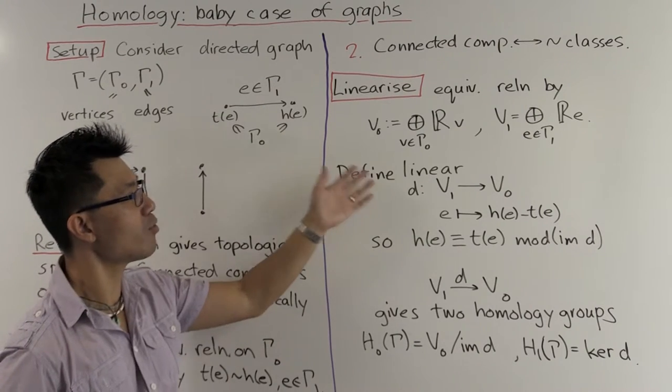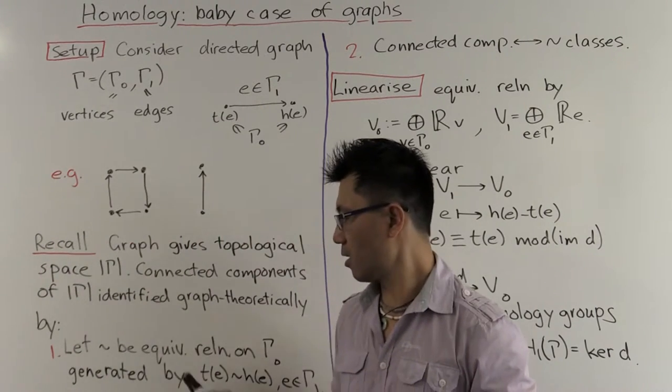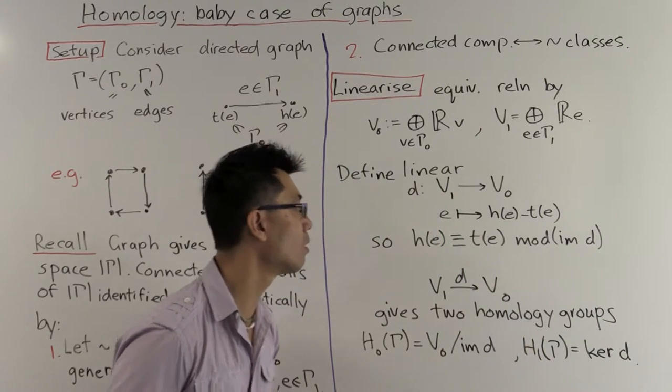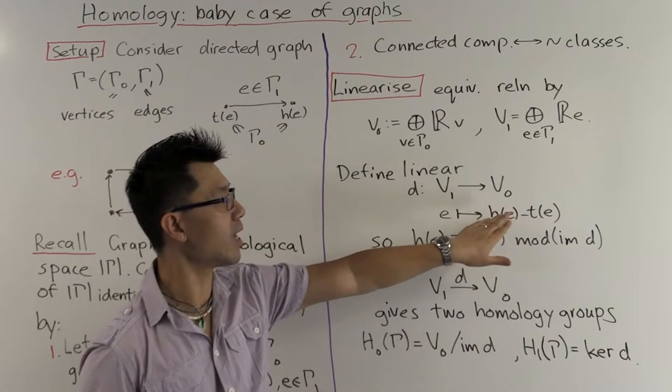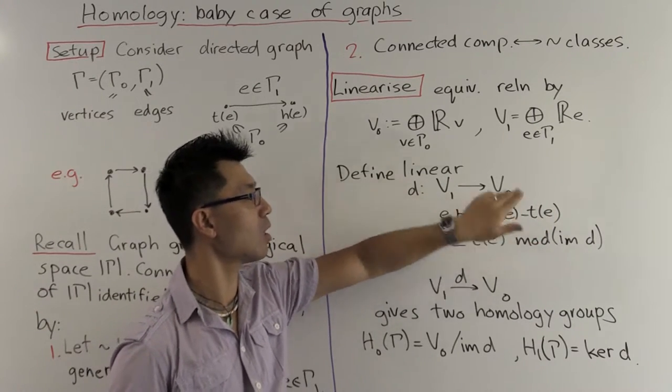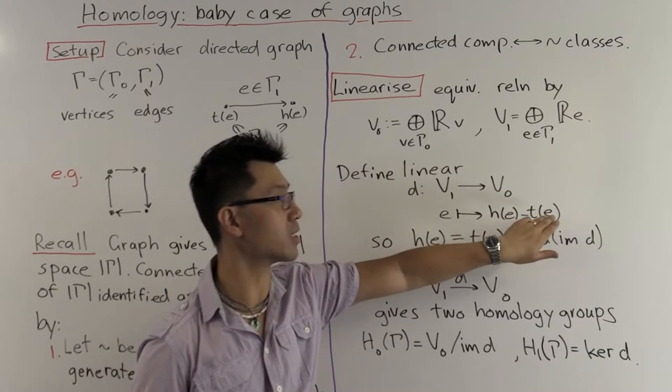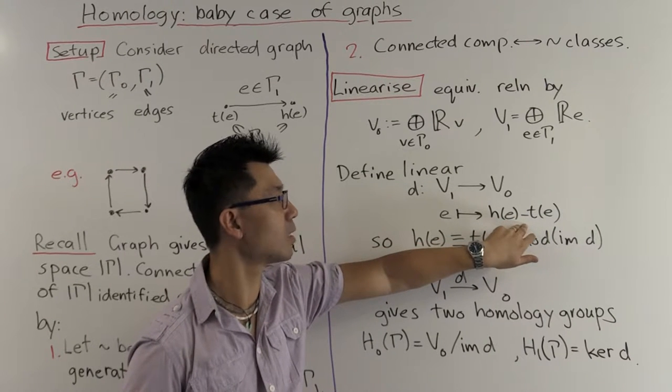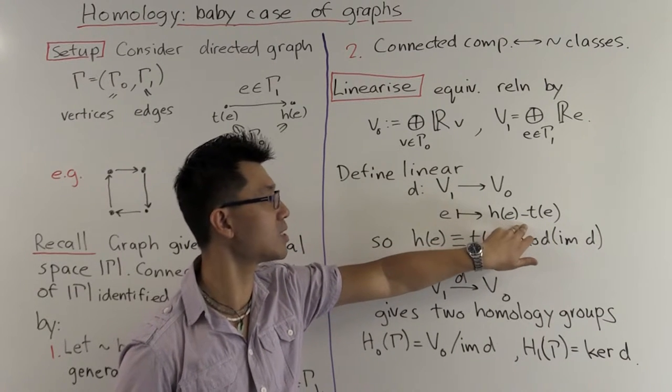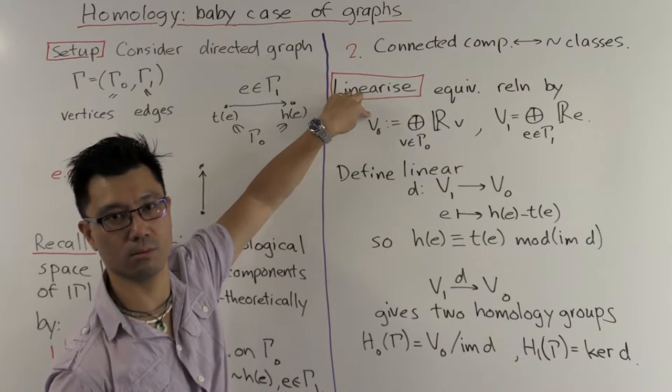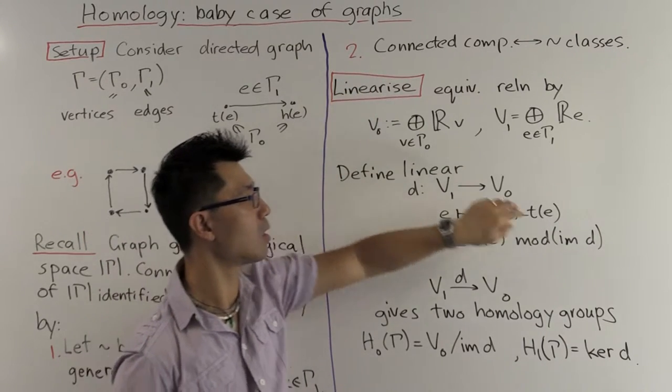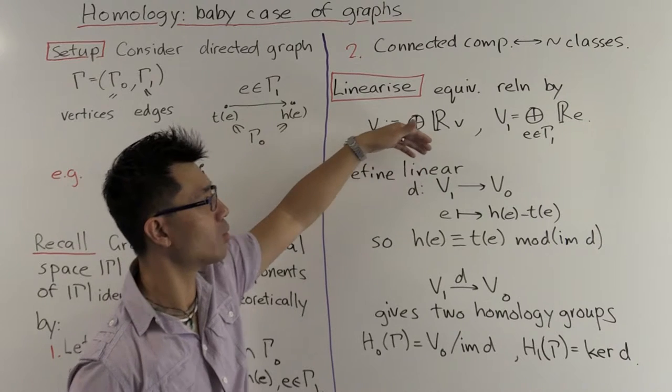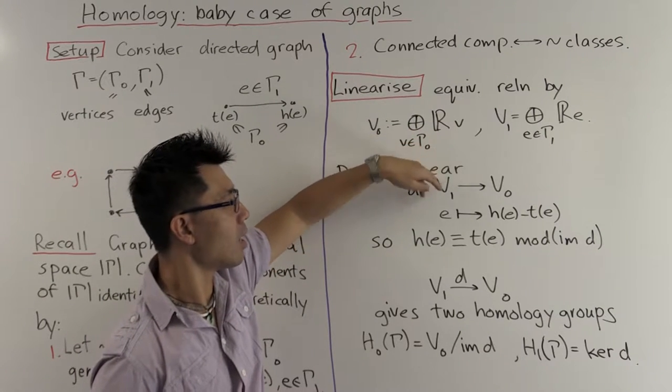And what about linearizing this equivalence relation here? The tail of E is equivalent to H of E. Well, instead of looking at the tail of E is equivalent to H of E, we consider the difference between these two. These are two vertices. And so you can consider the difference between them as a linear combination of two vertices, and hence an element of V0.